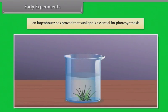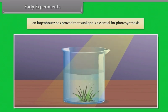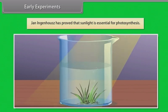Jan Ingenhaus proved that sunlight is essential for photosynthesis. He experimented on aquatic plants and observed that in the presence of sunlight there are small bubbles around the green parts of the plant, whereas in the absence of sunlight no bubbles were formed. These bubbles were found to be oxygen.